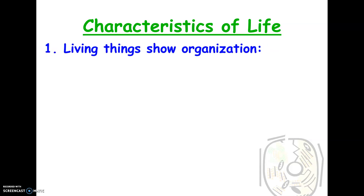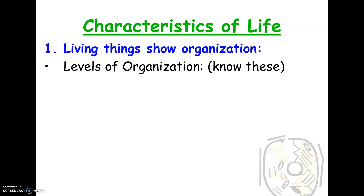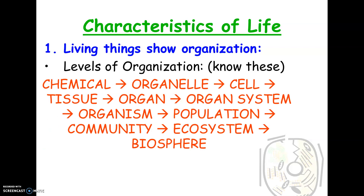The first characteristic is that living things show organization — they're not just the sum of their parts, they're more than that. For example, I can take wheels, a steering wheel, seats, and metal, but I don't actually have a working car. I have to put those things together in a very specific, organized way in order to have a working car. The same is true of living things.